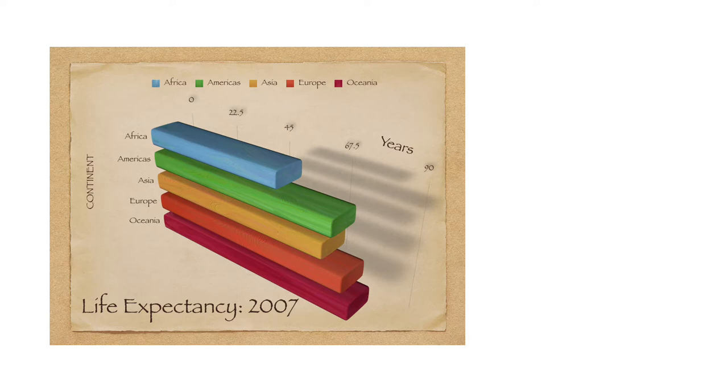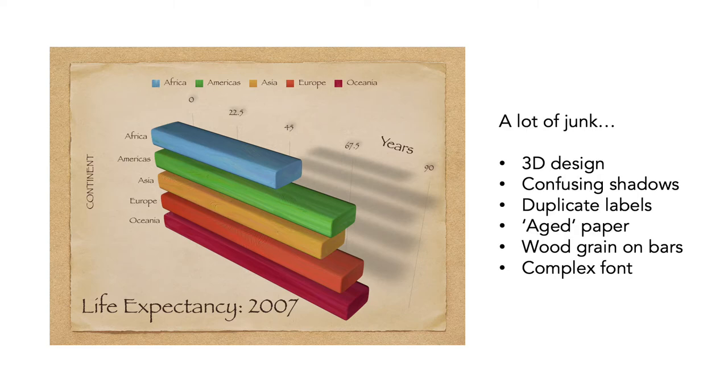So consider this graph for a moment. Stop your video and ask yourself, what do I think of this graph, and how could I make it clearer? Even a quick look should tell you that this graph has a lot of junk. The 3D design makes it hard to figure out what numbers are associated with the bars. The shadows make this even more confusing. The labels are duplicated. The continents are listed to the side of the bars, so the legend at the top gives no additional information. The aged paper, the wood grain on the bars, and the fancy font all make the plot harder to read than it really needs to be. There is actually very little data in this plot, and it's not very complex, but it takes a lot of brain power to figure out what it means.